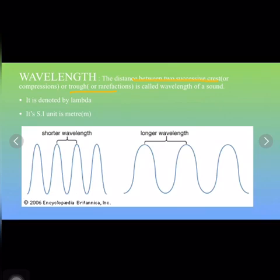Now, crest is written in brackets as compression, and trough in brackets as rarefaction. Compressions, as we have already discussed, are the regions of high pressure and density where the particles are crowded, and they are represented by the upper portion of the curve.